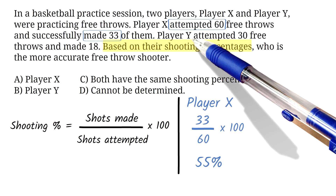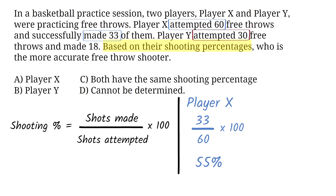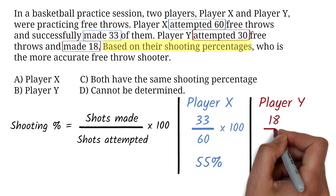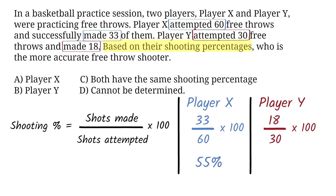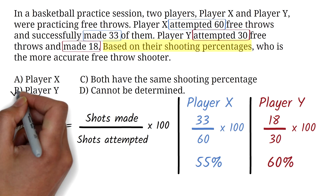Player Y attempted 30 free throws and successfully made 18 shots. To calculate Player Y's shooting percentage, divide 18 by 30, then multiply by 100. We do this on the calculator to get 60%. So Player Y's shooting percentage is 60%. Based on the calculated shooting percentages, Player Y is the more accurate free throw shooter. The correct answer is therefore B, Player Y.